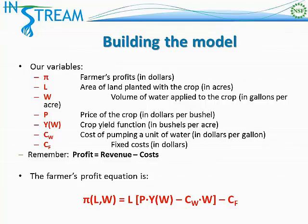C sub W times W gives us the total cost of pumping the water. We want to multiply this term in brackets by the area of land L planted in the crop, because this quantity in the brackets is for each acre, but the farmer is going to plant L acres. So we need to multiply the per-acre revenue minus costs by the number of acres planted, and then from this we subtract out the fixed costs C sub F. So this is our farmer profit equation.